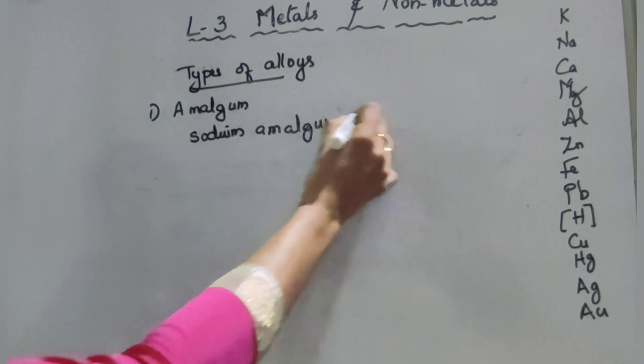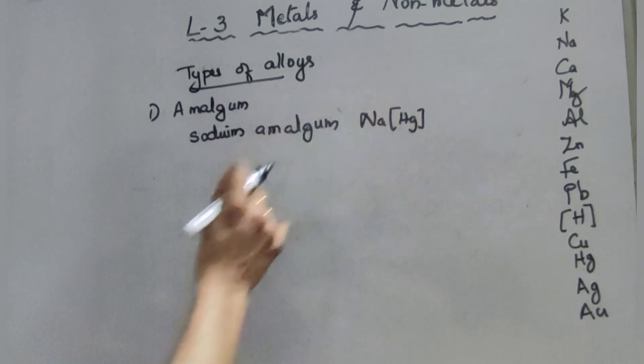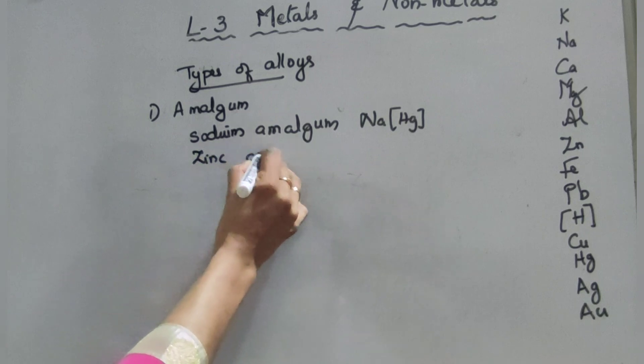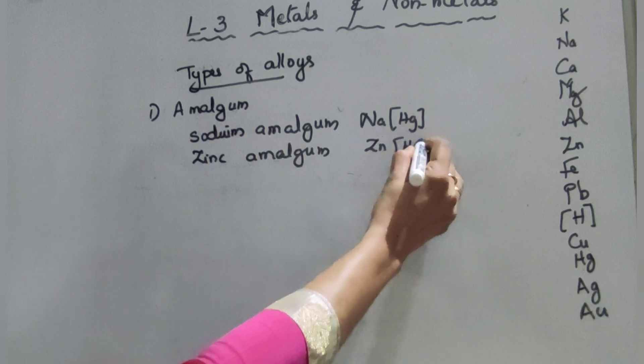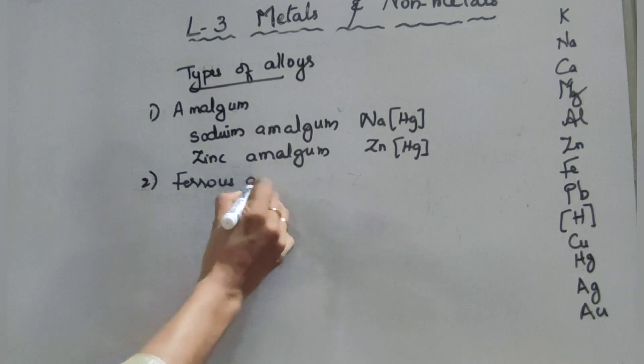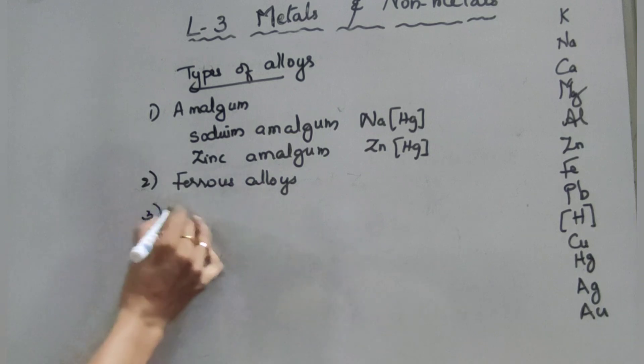The formula is sodium and mercury, that is sodium amalgam. And the next one: zinc amalgam. That is zinc and mercury, that is zinc amalgam. Second type of alloys: ferrous alloys. That is an alloy in which iron is present.